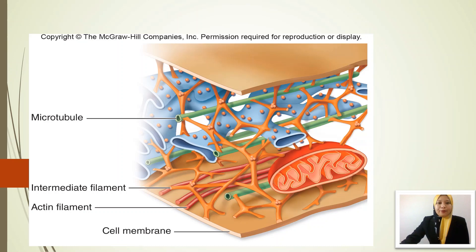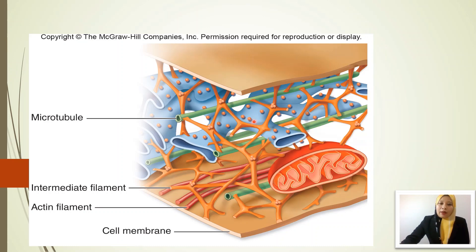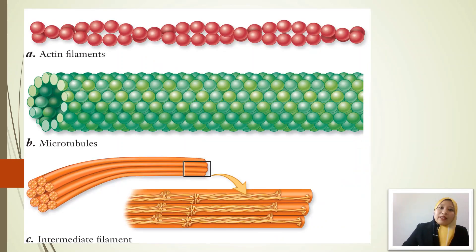Here is the structure of the cytoskeleton inside the cells within the cytoplasm. The green structures are the microtubules located within the cells. The orange structures are the intermediate filaments, scattered as a network of fibers. The red structures are the actin filaments. We can also see that organelles like mitochondria and endoplasmic reticulum are fixed at their locations because of these three types of cytoskeleton.